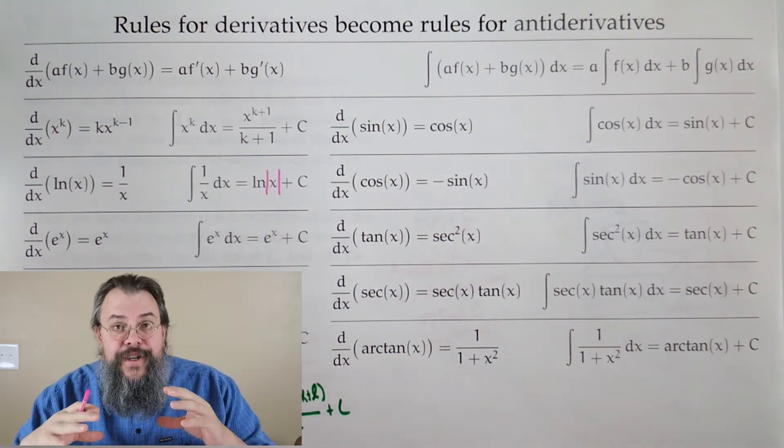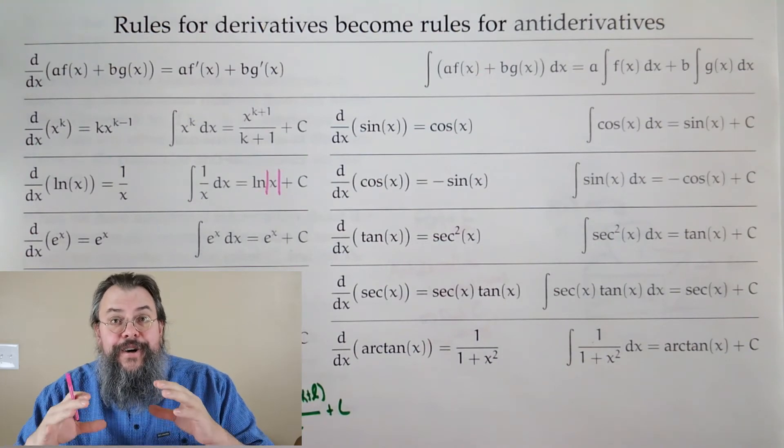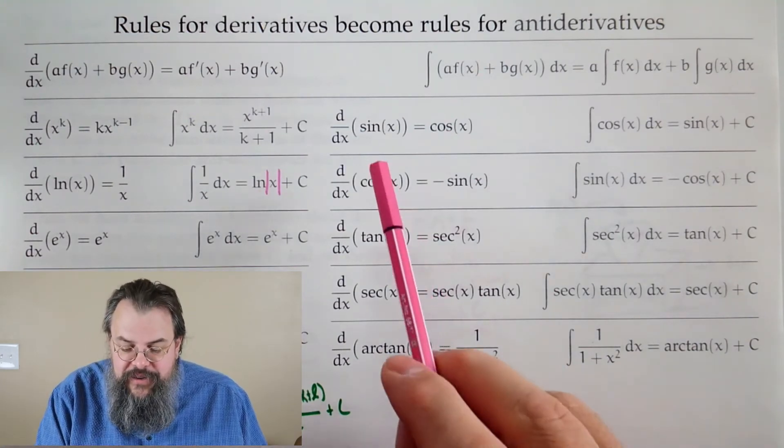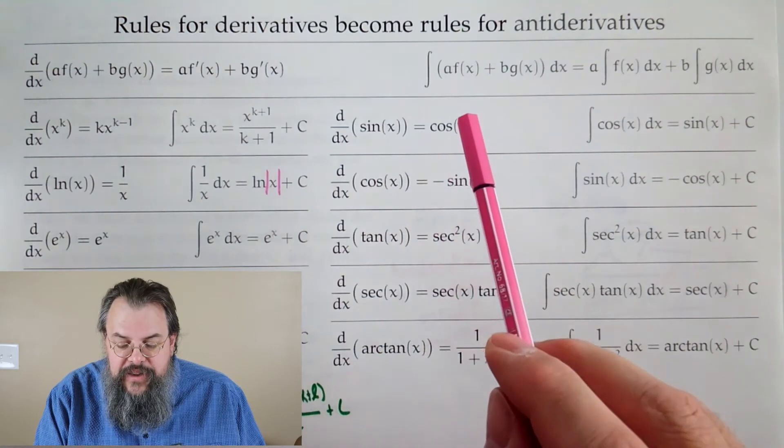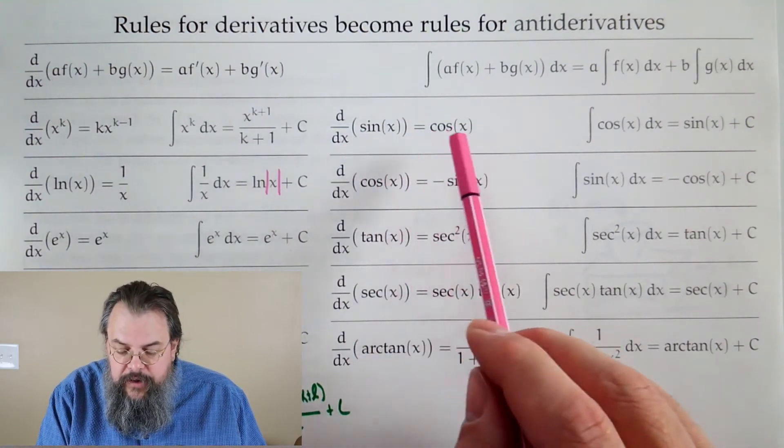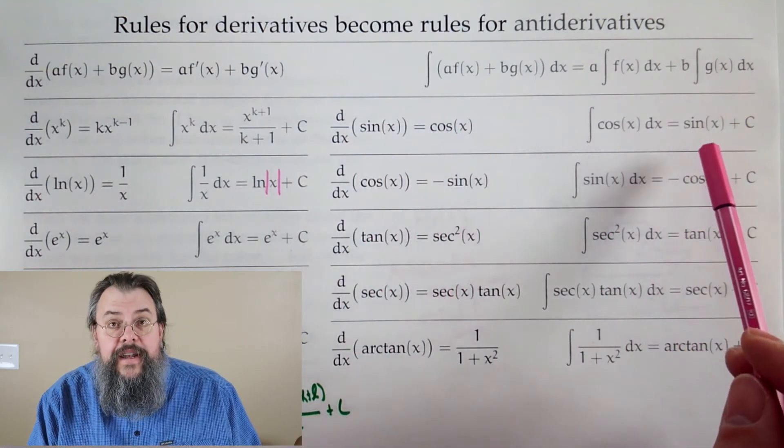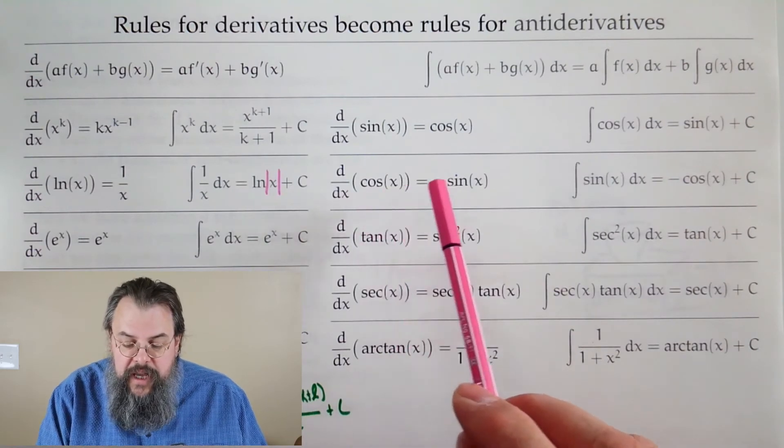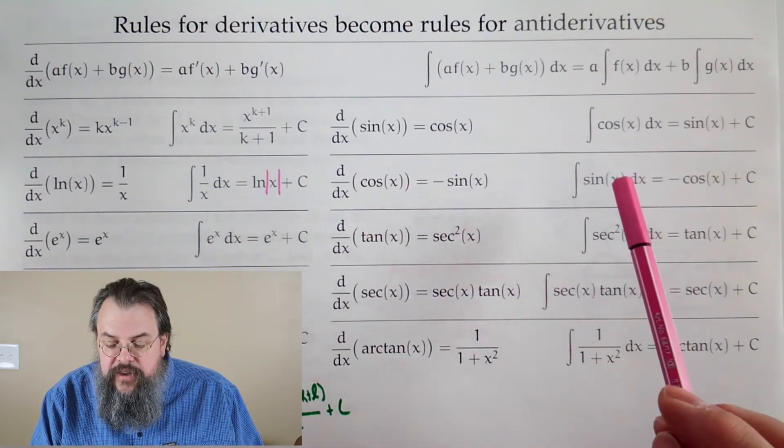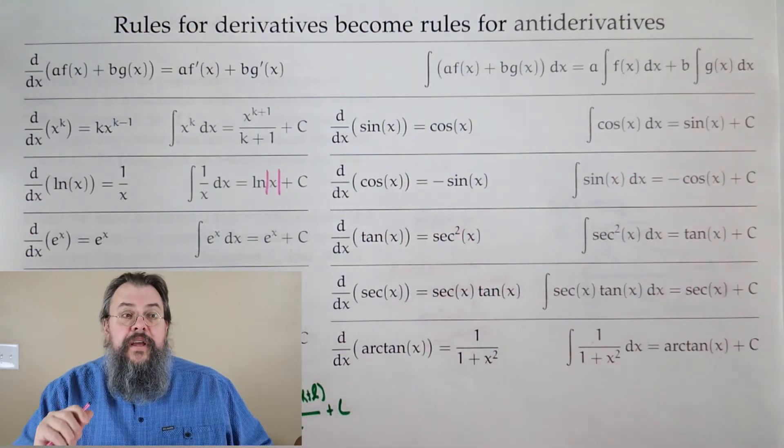Now let's turn to trig. The derivative of sine is cosine, so the antiderivative of cosine, we're trying to go backwards, is sine. Derivative of cosine is negative sine. So the antiderivative of sine is negative cosine.